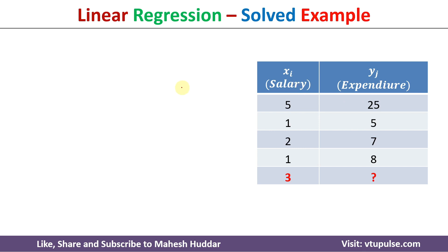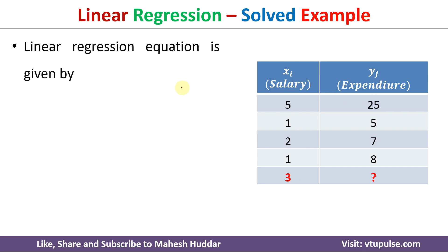The linear regression equation looks like this: y = a0 + a1*x, where y is the dependent variable and x is the independent variable. a0 is the intercept and a1 is the coefficient of the independent variable.